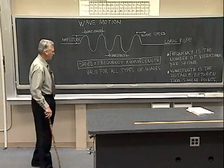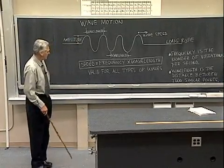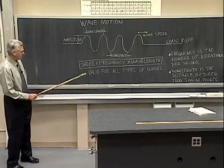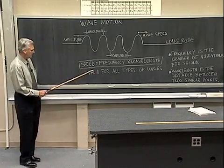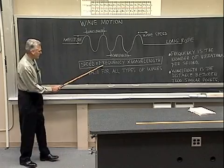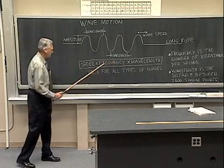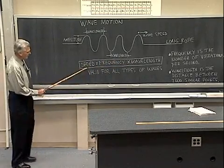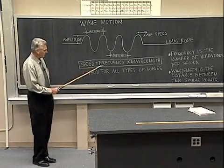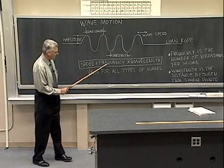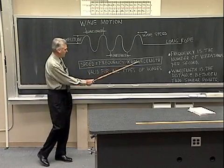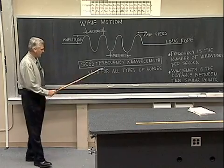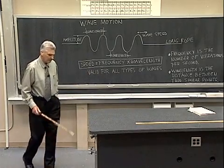The relationship among the various parameters — frequency, wavelength, and speed — is given by this simple equation: the speed is equal to the frequency multiplied by the wavelength. That equation is valid for all types of waves.